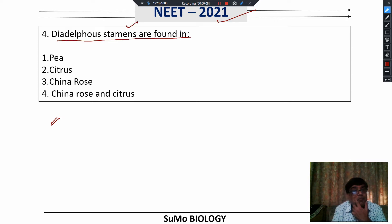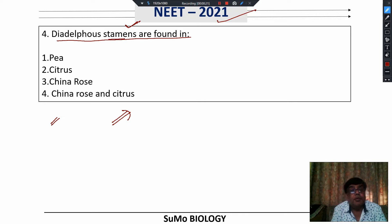Stamen is the unit of the male reproductive organ in a flowering plant. In a flower, there are four whorls: calyx, corolla, androecium, and gynoecium. Androecium and gynoecium are the reproductive organs. Androecium represents the male reproductive organ and gynoecium represents the female reproductive organ. The unit of androecium is the stamen.